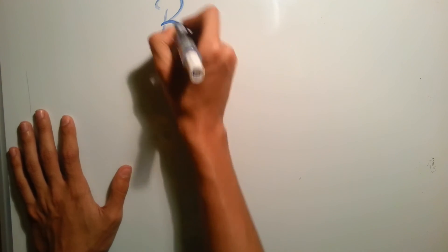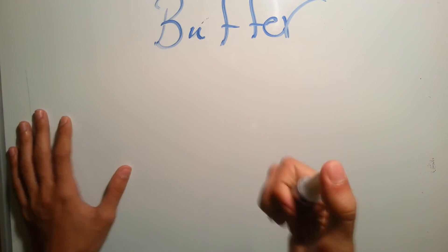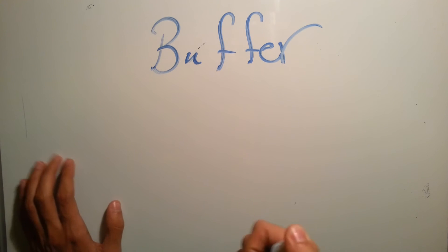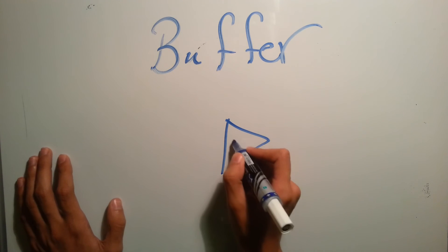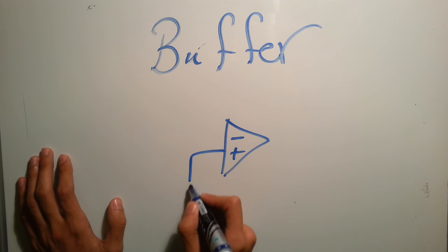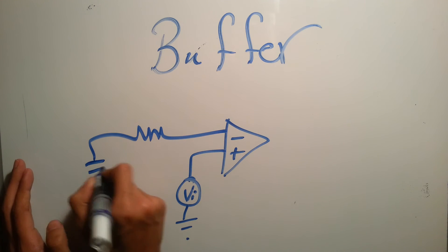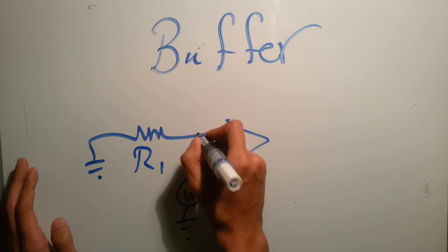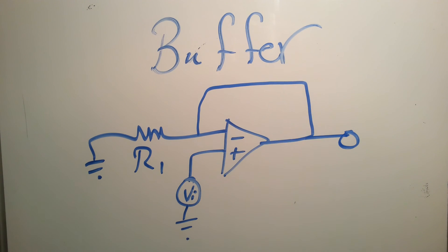So buffer. It will be the same circuit but with R1 connected to the ground and R2 equals zero, which means a short circuit. So this is the buffer.